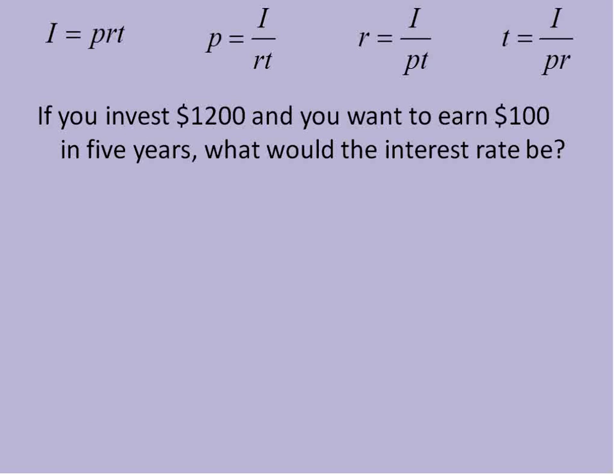The final question, if you invest $1,200 and you want to earn $100 in five years, what would the interest rate be? So we're looking for the interest rate, so we're going to use our third equation. The rate is equal to the interest divided by the principal times the time.